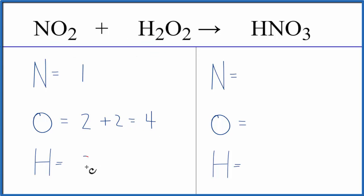Hydrogens, we have two. On the product side of the equation, we have one nitrogen, three oxygens, and one hydrogen.